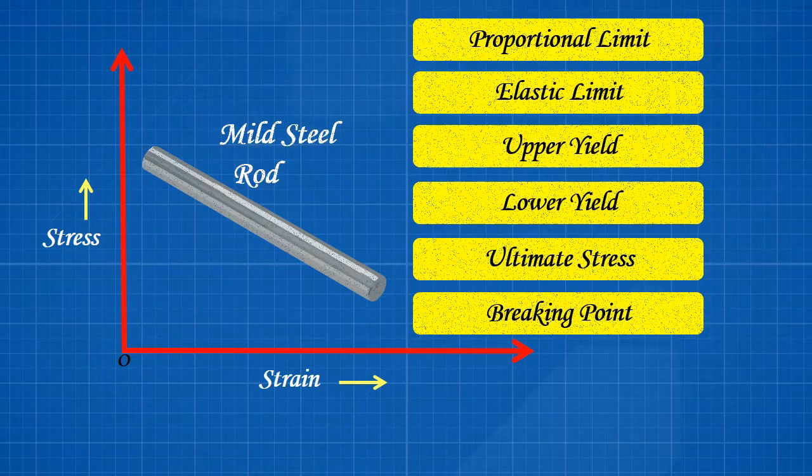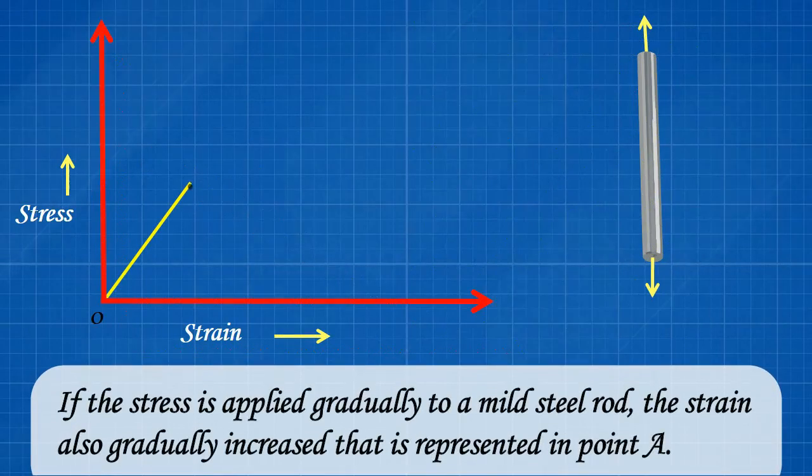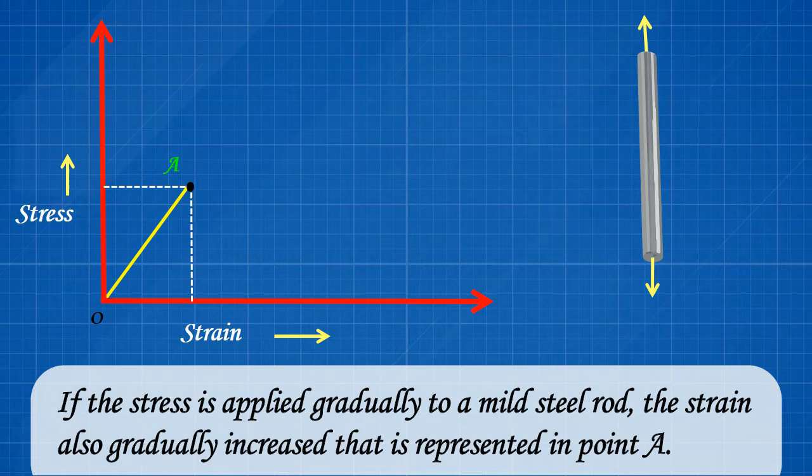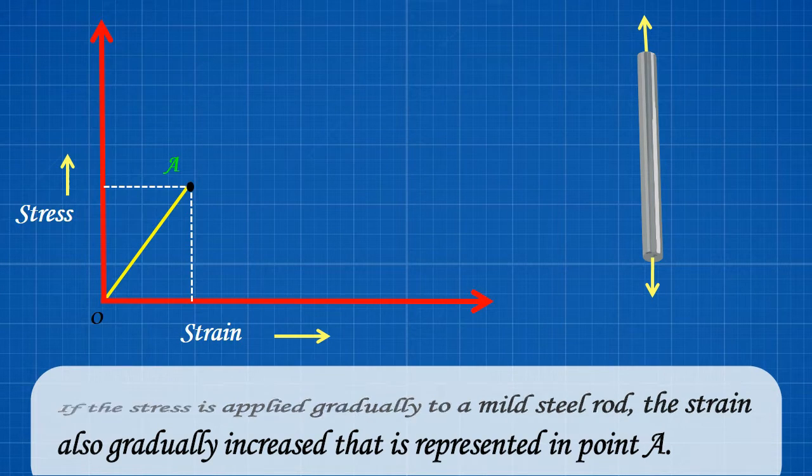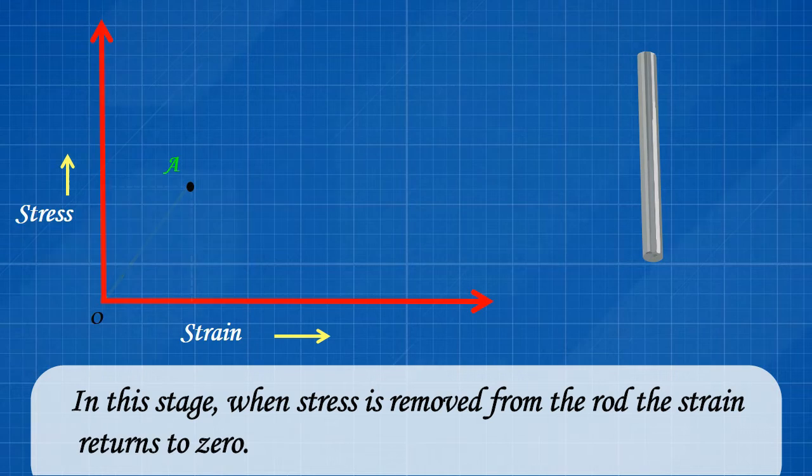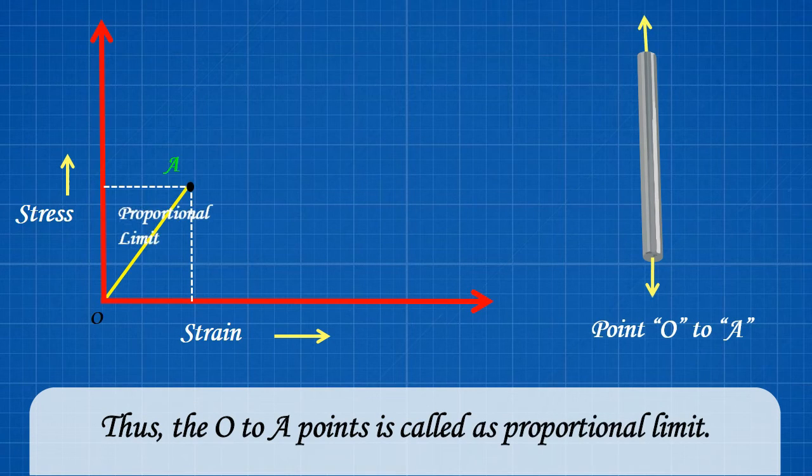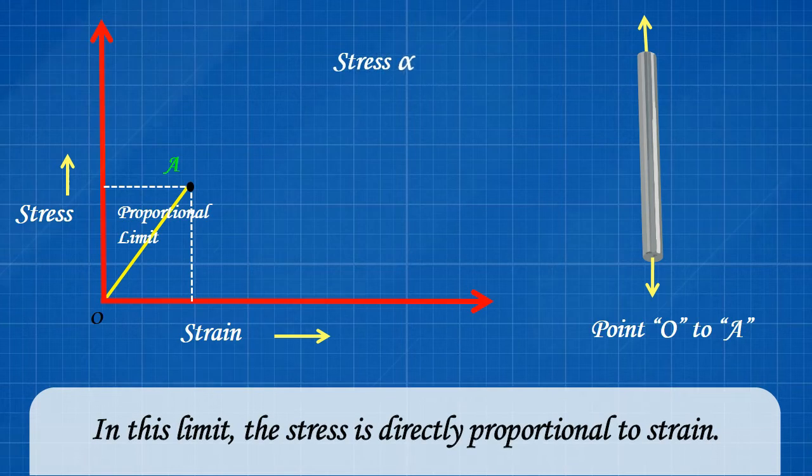Proportional Limit. If the stress is applied gradually to a mild steel rod, the strain also gradually increased that is represented in point A. In this stage, when stress is removed from the rod the strain returns to zero. Thus, the O to A points is called as proportional limit.